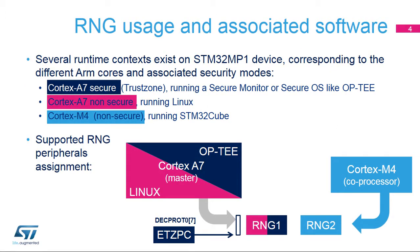RNG1 is a secure peripheral under ETZPC control through ETZPC DECPROT0 bit 7. RNG2 is a non-secure peripheral. The RNG1 instance can be allocated to the ARM Cortex-A7 secure core to be controlled in OPTI by the RNG OPTI driver, or the ARM Cortex-A7 non-secure core for use in Linux by the Linux hardware random framework. RNG2 instance can be allocated to the ARM Cortex-M4 core to be controlled in the STM32Cube MPU package by the STM32Cube RNG driver.